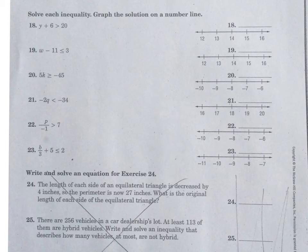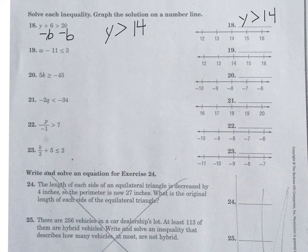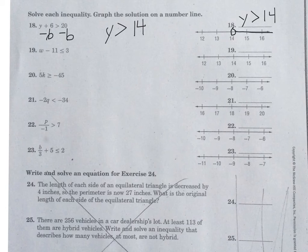For solving the inequality in number 18, subtract 6 from each side, and y is greater than 14. To graph it, draw an open circle on 14 because the inequality does not include equals. Since y must be greater than 14, the arrow points to the right.